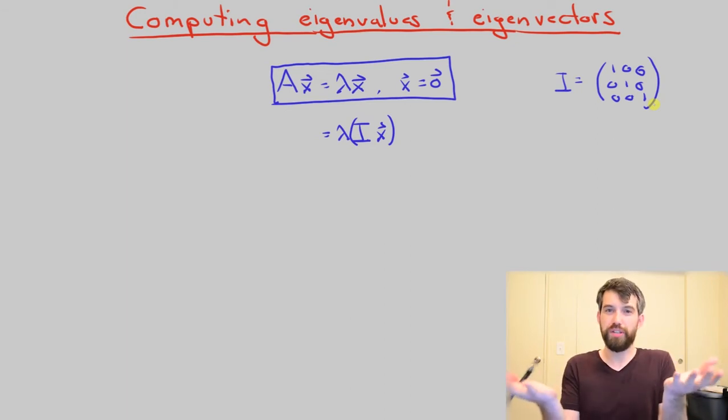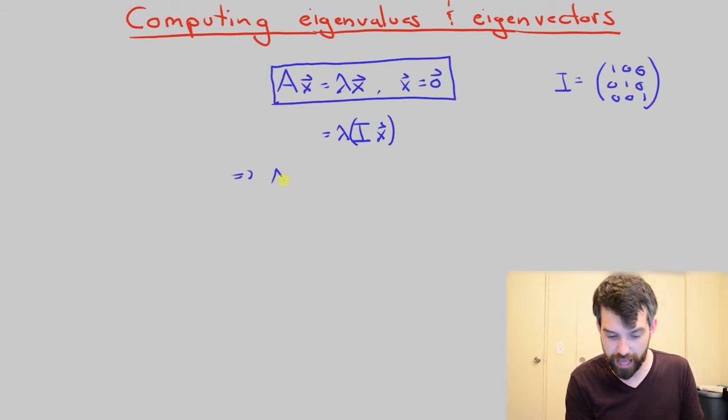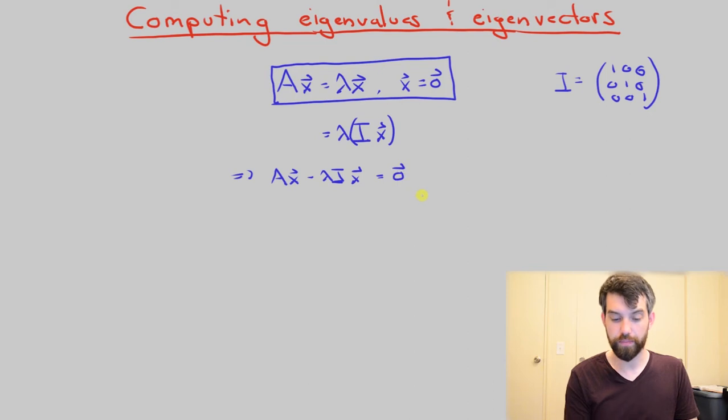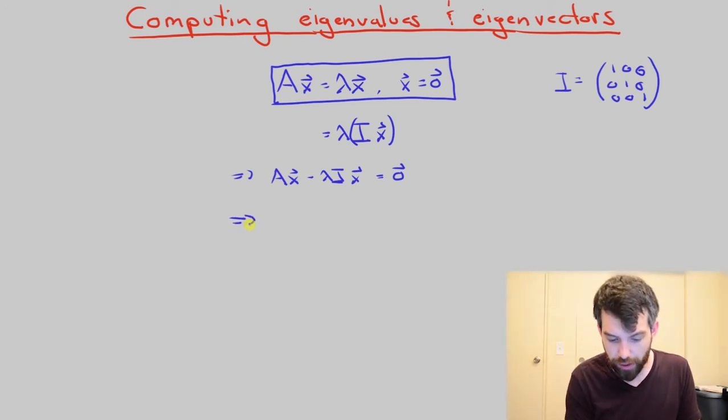Well, now I've got an equation where two things are on a different side. Let me put them both on the same side. So I'm then going to manipulate, and I'm going to say that this Ax, and I'm going to subtract it off minus lambda I times x, and this is all going to be equal to the zero vector. And then I notice that both of the two terms I'm subtracting have an x in them. So why don't I try factoring that out? So I'm going to come along here and say that this is A minus lambda I, one single matrix, all multiplied by the vector x, and that's going to be equal to zero.